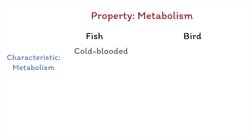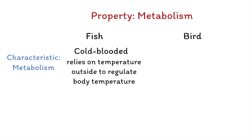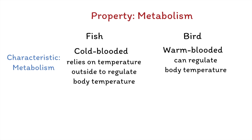Fish are cold-blooded, which means they cannot regulate their body temperature internally and instead rely on the temperature of their environment to regulate their metabolism. As a result, their metabolism slows down in colder temperatures and speeds up in warmer temperatures. In contrast, birds are warm-blooded, which means they have the ability to regulate their body temperature internally through metabolism. Birds have a high metabolic rate to generate the heat required to maintain their body temperature, which is typically higher than that of fish. In summary, both fish and birds have metabolism as a property of life, but their metabolic rates and processes differ based on their distinct lifestyles and habitats.